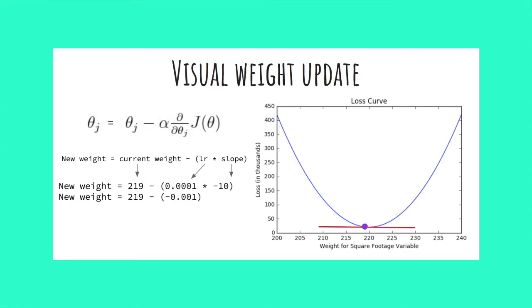However, when we get closer to our minima, the tangent line gets closer to horizontal and a horizontal line has a slope of 0. In this image, our slope is approaching that point.